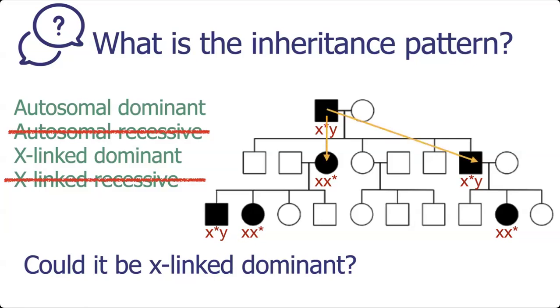What I want you to do here is follow that X down from generation one to generation two. This daughter received that mutated X from her dad, but over here this son cannot have received that mutated X from dad because dad passes on a Y, not an X. This is the concerning transmission here that's not possible for this to be x-linked dominant, so we know this answer is no.